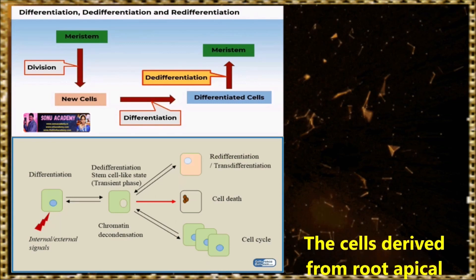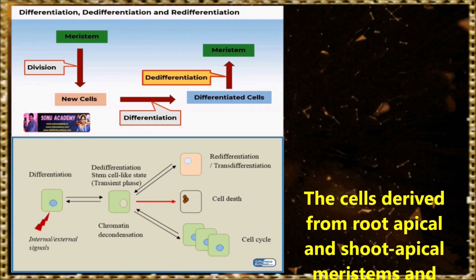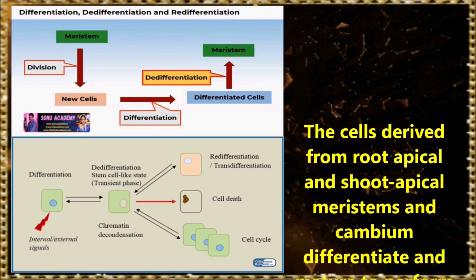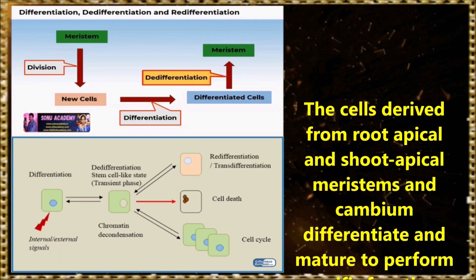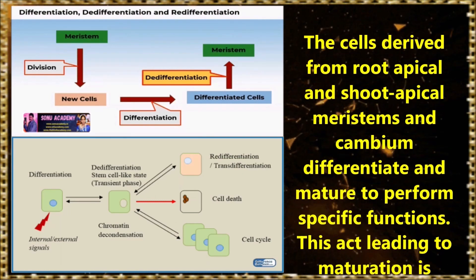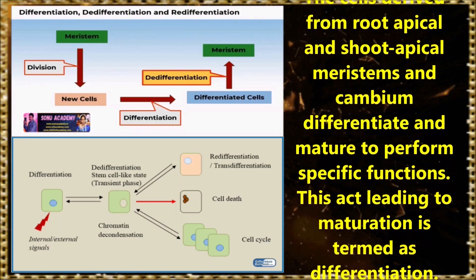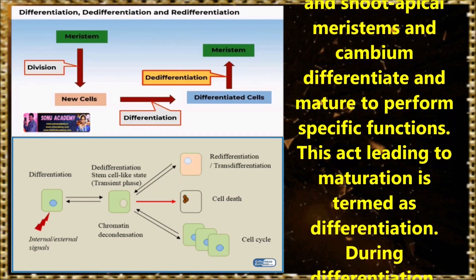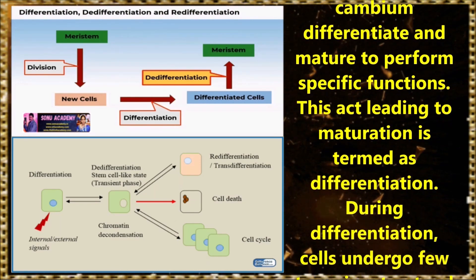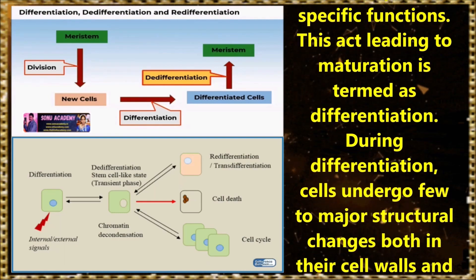Children, now let us discuss about differentiation, de-differentiation and re-differentiation. The cells derived from the root apical and shoot apical meristem and cambium differentiate and mature to form specific functions. This act leading to maturation is termed as differentiation.